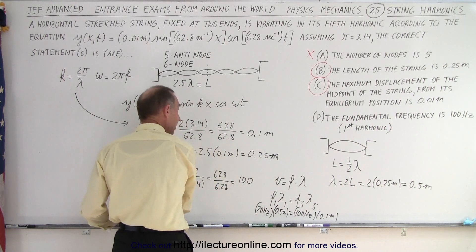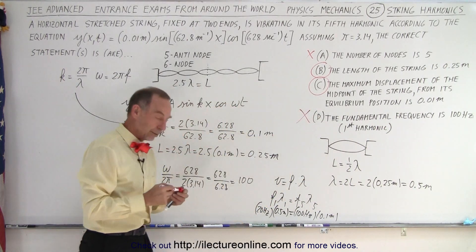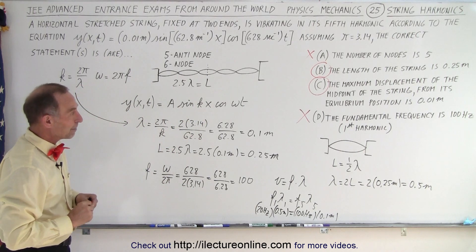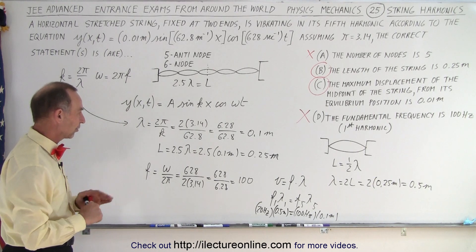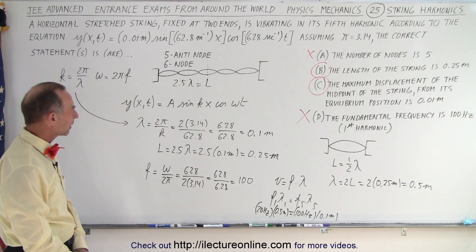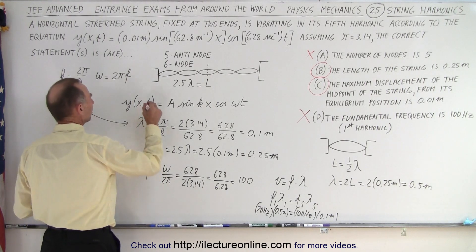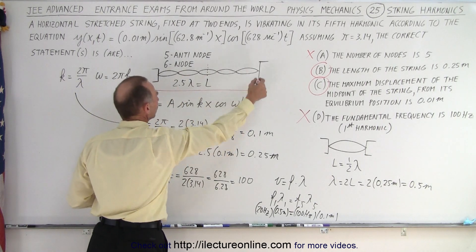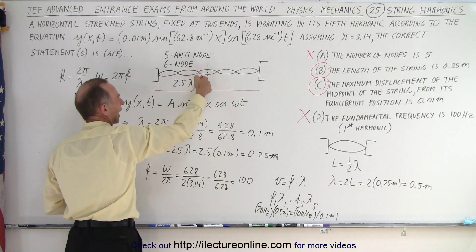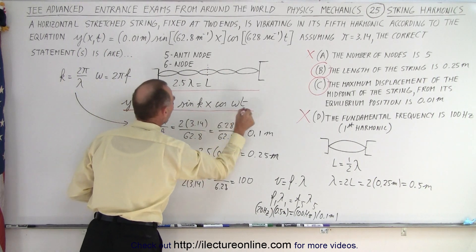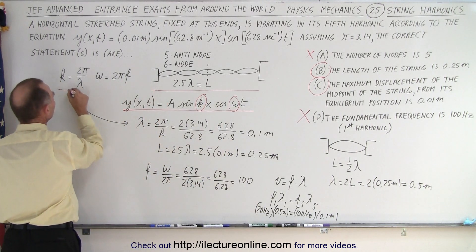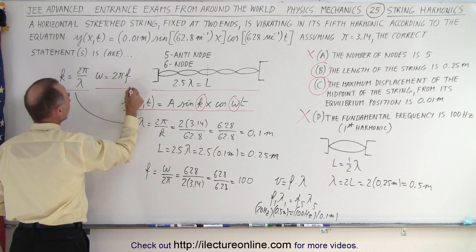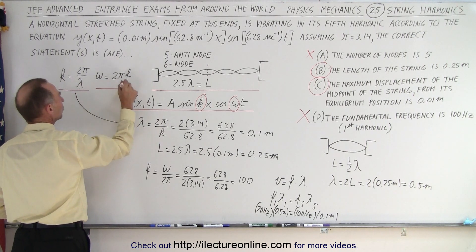So answers A and D are not correct; B and C are the correct answers. To solve this problem you need to visualize the string, recognize that the midpoint is an antinode giving maximum displacement, then use the general wave equation to extract the wave number and angular frequency, which give you the wavelength and frequency.